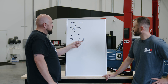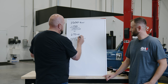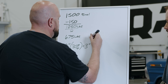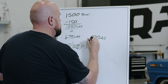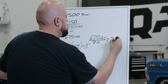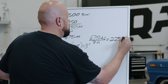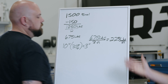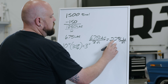Spring rate is measured in pounds per inch, so all we do is take our pounds divided by inches. 675 divided by three inches gives us 225 pounds per inch. That is our spring rate — but we're not done yet, because this is an independent suspension.